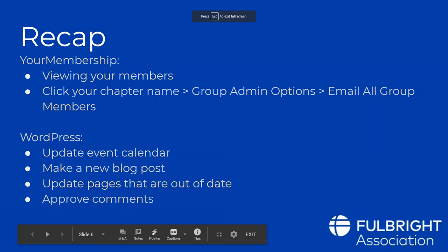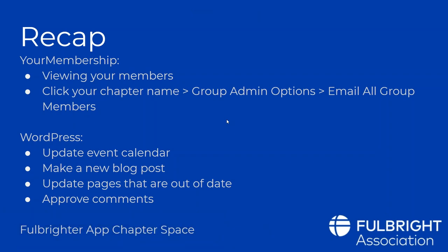To recap: we went through your membership, showed you how to view your members, showed you that when you click your chapter name and group admin options you have many options including emailing all members. We went through the WordPress site on how to update your event calendar, make a blog post, update pages like the board member list, and approve comments. Munir also showed you the Fulbrighter app chapter space. Next month's webinar will be an in-depth dive on how to use your chapter space.